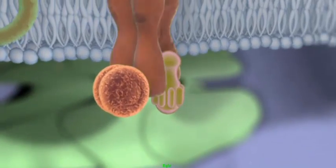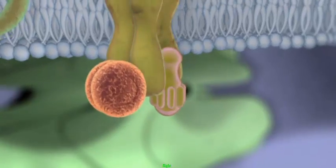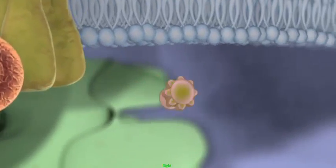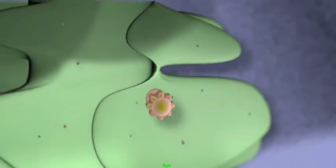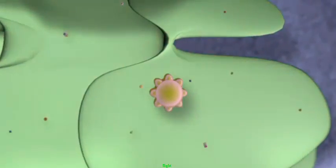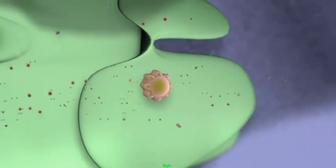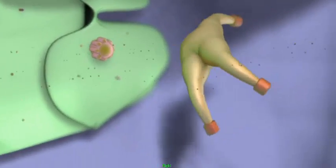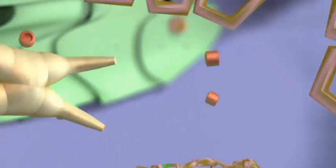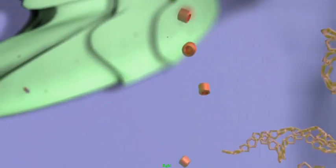The signal passing machinery inside the cell can look and work very differently depending on the intended effect. Here we see a signaling cascade that results in the release of energy molecules. Once liberated, they are sent on their way via the bloodstream to power cells in another area of the body.